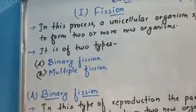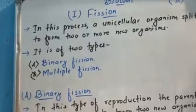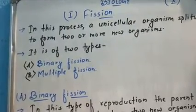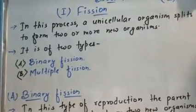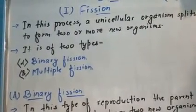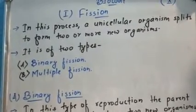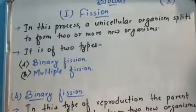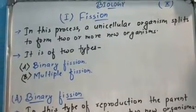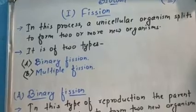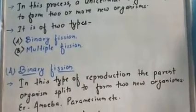Today we will look at five to six types of asexual reproduction: fission, spore formation, regeneration, fragmentation, and vegetative propagation. The first type is fission. In this process, a unicellular organism splits to form two or more new organisms. This process may involve binary fission and multiple fission.